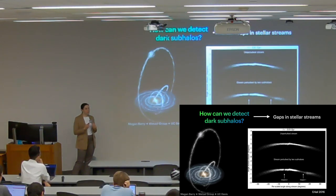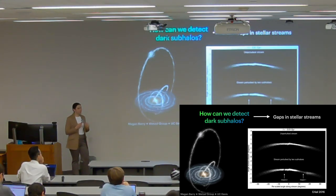So we can hope to detect dark subhalos using gaps in stellar streams, among other ways, but we'll see very soon why we using fire simulations might focus on this method.